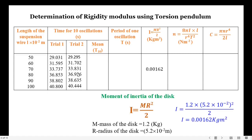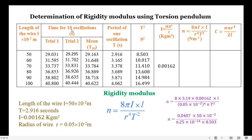Here we have all the readings in the table. Next, calculation of the moment of inertia of the disk. Substituting mass and radius values of the disk in the formula, the I value is calculated as 0.00162 kilograms times meter squared. Next, we find the mean time period for trial 1 and trial 2, which represents the time period for 10 oscillations. Then time period T for 1 oscillation and T squared are calculated.